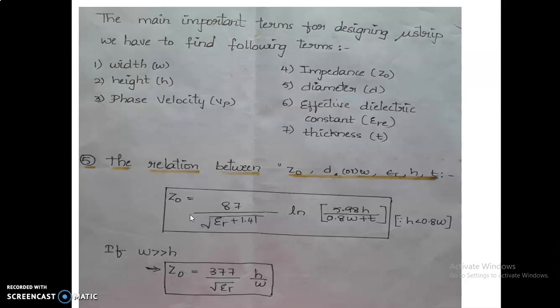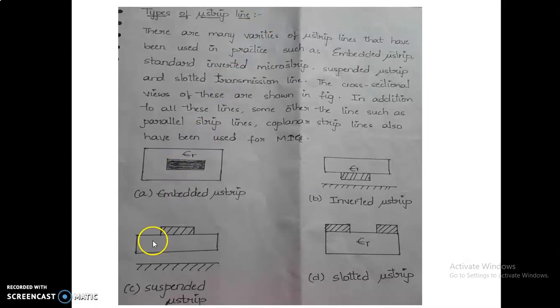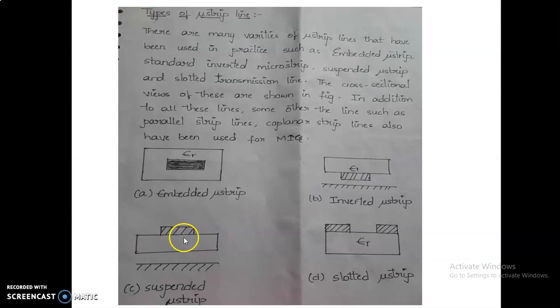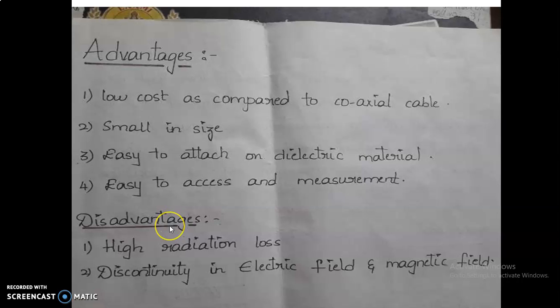There are different types of microstrip lines. In the first type, the conductor is embedded inside the microstrip. In the inverted microstrip, the order is flipped: dielectric first, then conductor. There is also a slotted type using two conductors, and finally the suspended microstrip. So there are four types of microstrip that can be used for transmission.